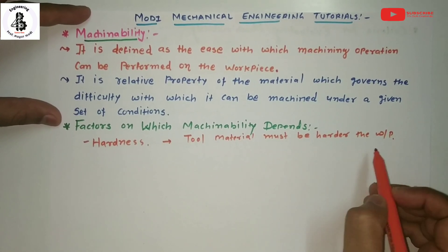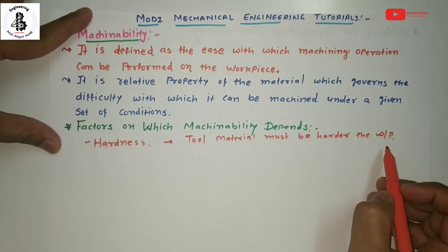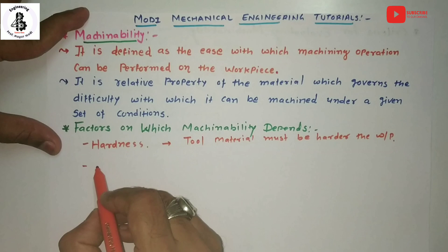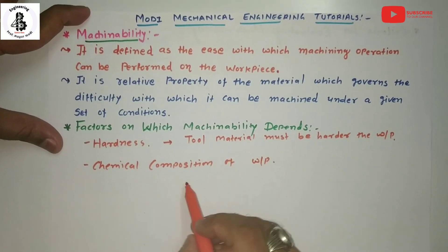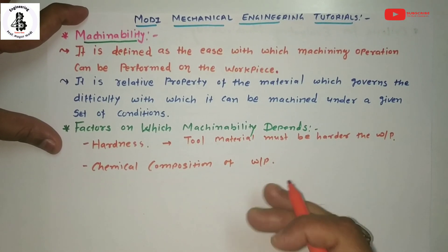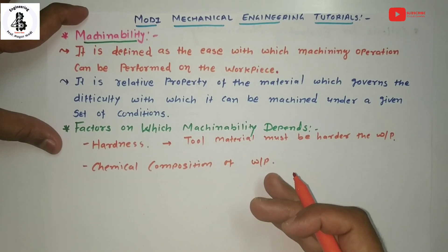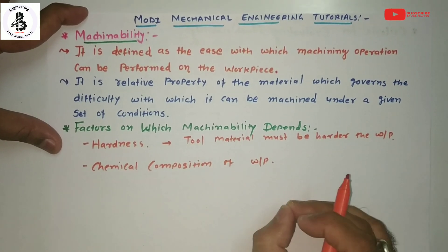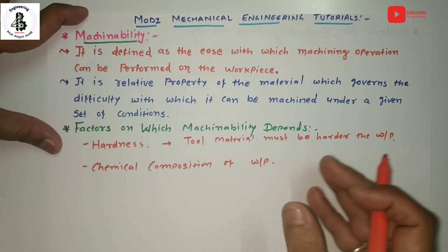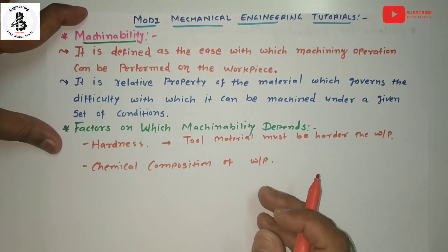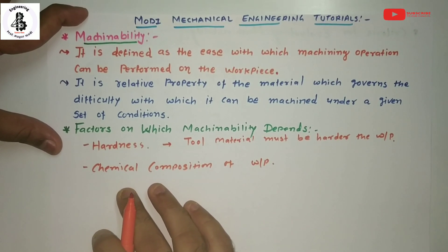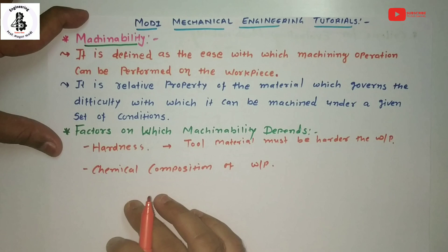The second factor is the chemical composition of the workpiece material. The type and percentage of alloying elements added during manufacturing of the workpiece material has a significant importance, as it governs and directly affects the machinability of that particular material.